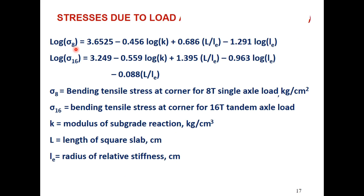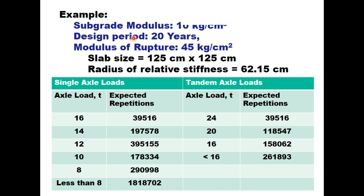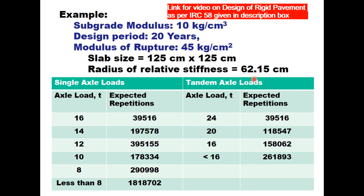The stresses due to load are estimated using design equations. Sigma-8 is the bending stress at the corner for an 8-ton single axle load, and sigma-16 is the bending stress at the corner for a 16-ton tandem axle load. For the example: subgrade modulus is 10 kg per centimeter cube, design period is 20 years, modulus of rupture of concrete is 45 kg per centimeter square, and slab size is 125 cm by 125 cm. The radius of relative stiffness Le is calculated as 62.15 centimeter.